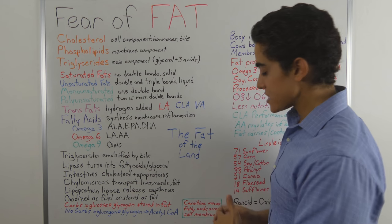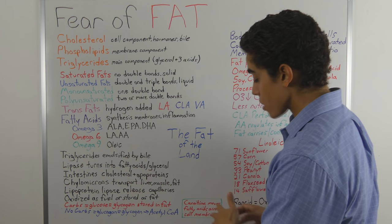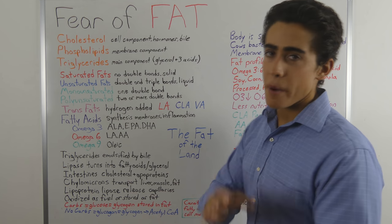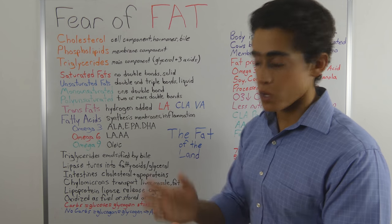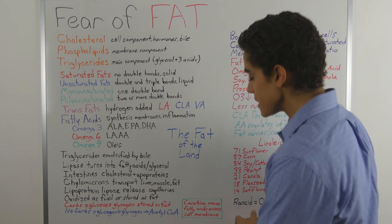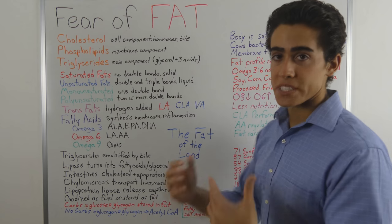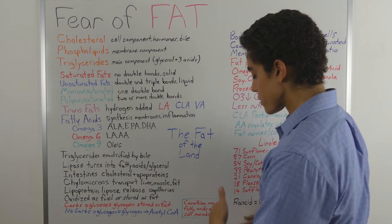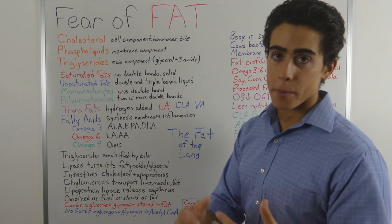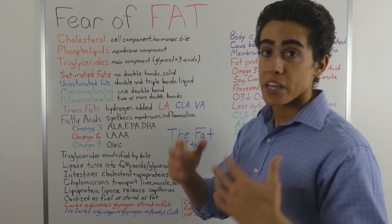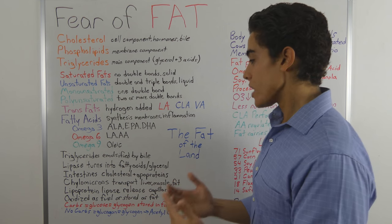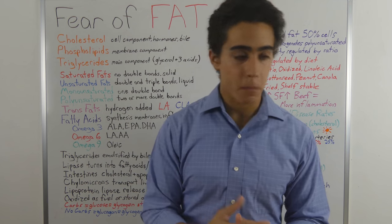One thing worth mentioning is that carnitine, which is only found in animal foods — although our body can produce small amounts — greatly improves energy metabolism by transporting fatty acids across cell membranes. So if you eat more meat, you will have better energy metabolism.